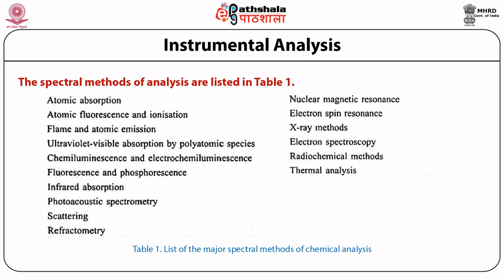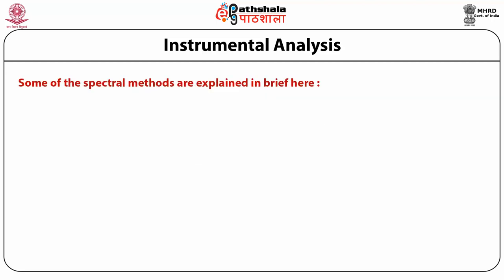The major spectral methods of analysis include atomic absorption, atomic fluorescence, flame and atomic emission, ultraviolet and visible absorption by polyatomic species, chemiluminescence and electrochemiluminescence, fluorescence and phosphorescence, infrared absorption, photoacoustic spectrometry, scattering, refractometry, nuclear magnetic resonance, electron spin resonance, X-ray methods, electron spectroscopy, and radiochemical spectroscopy. Some of the spectral methods briefly discussed for introductory purposes are UV-visible spectroscopy, IR spectroscopy, atomic absorption spectroscopy, flame emission spectroscopy, and atomic emission spectroscopy.